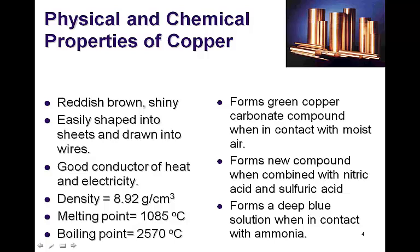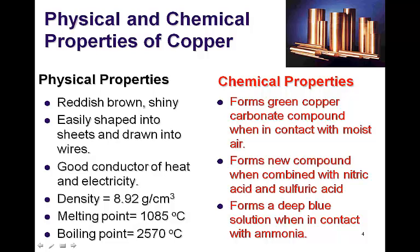So here's a list of physical and chemical properties of copper. Pause the video lecture and let's identify whether or not these are physical properties or chemical properties. If you said everything on the right-hand column was a chemical property, you'd be correct. All of these on the left, the reddish-brown and shiny, the easily shaped into sheets and drawn into wires, good conductor of heat and electricity, the density melting and boiling points, we're always going to have copper after we measure any of those properties.